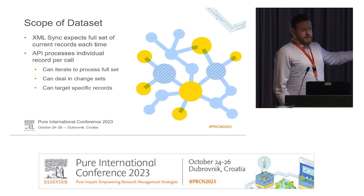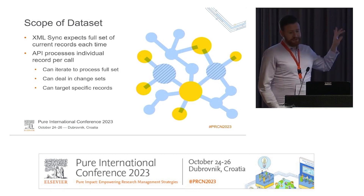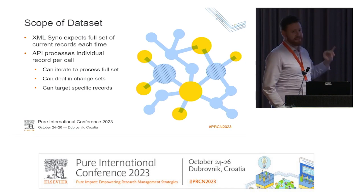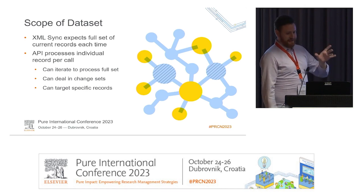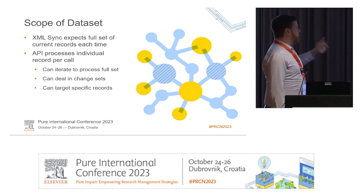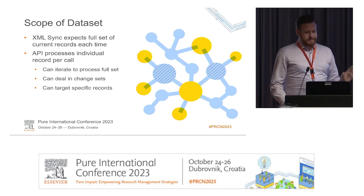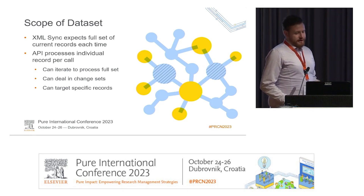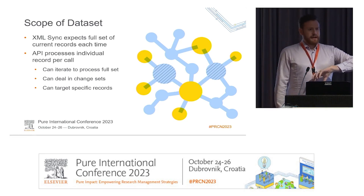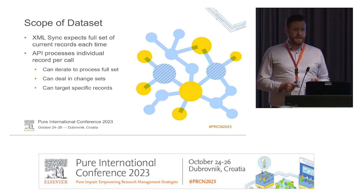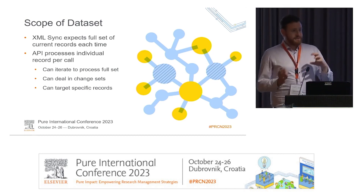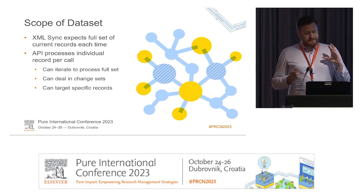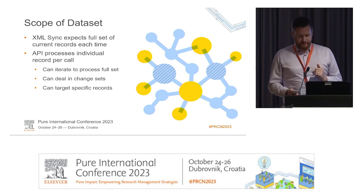In terms of scope, for those used to XML or database view synchronisations, Pure expects a full set of current records each time. There is some functionality recently released around the resumption token that offers some variation, but for the most part it's all of your current staff, all of your current organisations, and that's how Pure expects the data. The API does an individual record per call — it can process a set of records by iterating through them, deal with just what's changed in the last 24 hours, so you can do deltas instead.